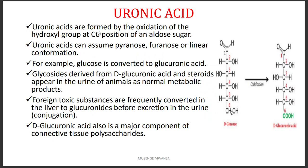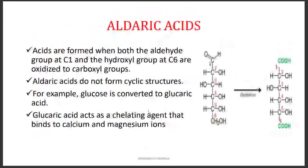We also have uronic acid, which is formed by the oxidation of carbon number six. In the case where D-glucose is oxidized at position number six, we form D-glucuronic acid. Uronic acids are important in connective tissue, and they are also found in urine excretion. We also have alderic acids, formed by oxidation of both carbon number one and carbon number six — making it a combination of aldonic acid and uronic acid.